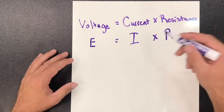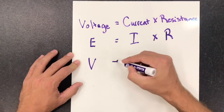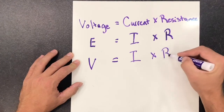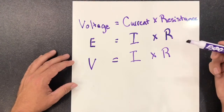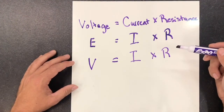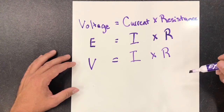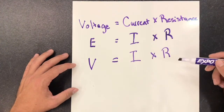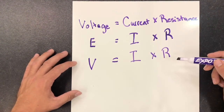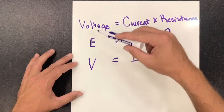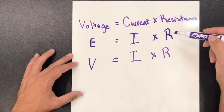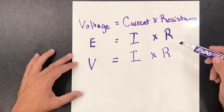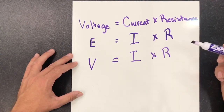You will also commonly see V equals I times R. In either scenario, as long as you are plugging in voltage where voltage is supposed to be, current where current is supposed to be, and resistance where resistance is supposed to be, you're going to get the correct answer. So either way you say it, it's going to be Ohm's Law. E equals I times R, because E is for voltage, I is for current, and R is for resistance.